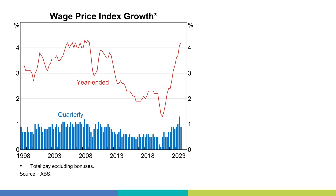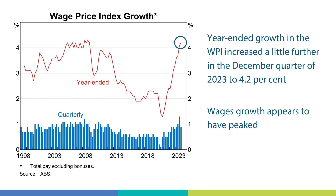Labour market conditions influence wages growth, so let's have a look at that now. The red line shows growth in the Wage Price Index, one measure of wages growth. WPI growth increased a little further in year-ended terms in the December quarter of 2023 to be at 4.2%. But wages growth appears to have peaked and there are some indications that it will moderate over the year ahead.